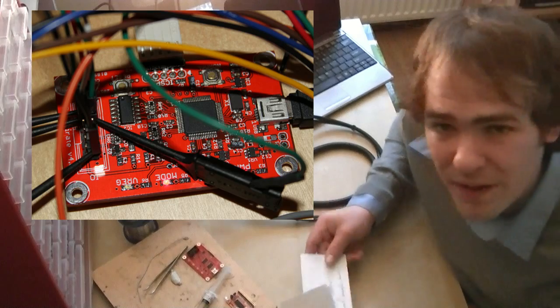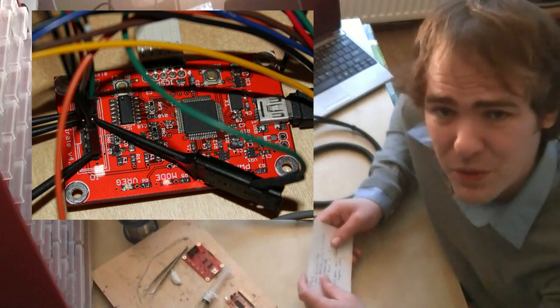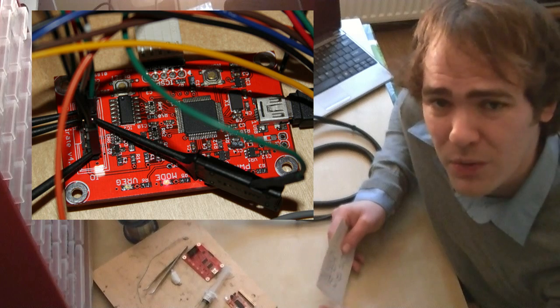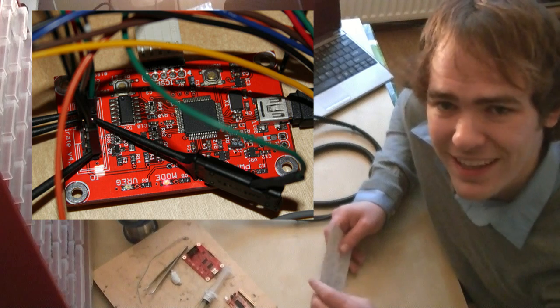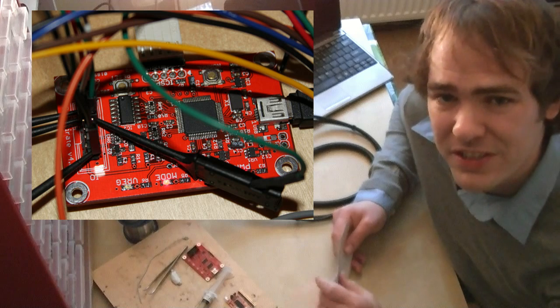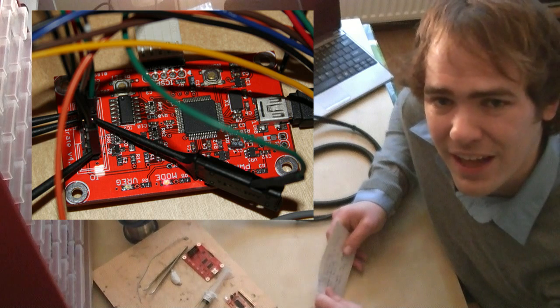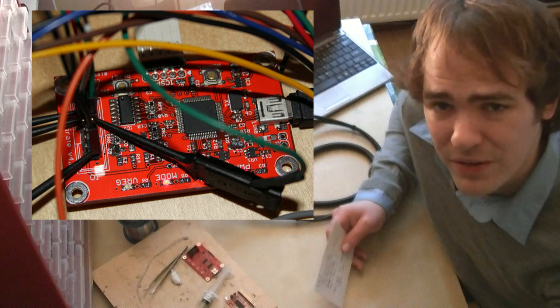For firmware, first up we've got Bus Pirate version 6 firmware coming out. That'll be for hardware version 3 and version 4. Brent's pushed a whole bunch of new features into it, an auto-baud feature to detect the UART baud rate or speed.